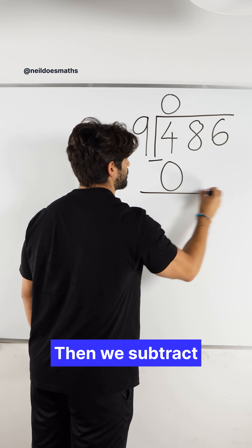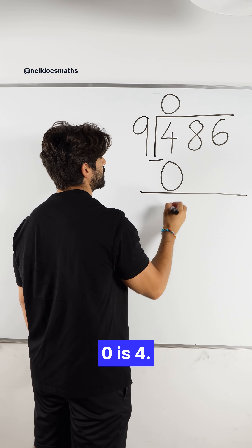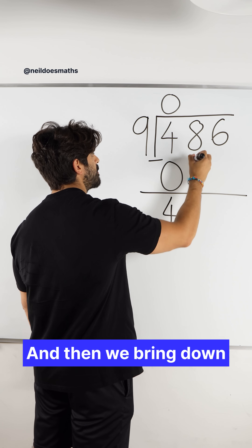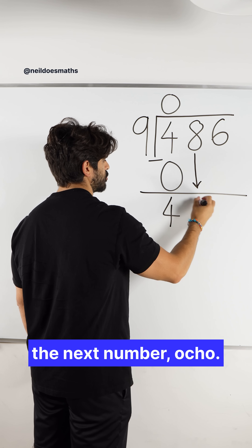Zero times nine is zero. Then we subtract. Four take away zero is four. And then we bring down the next number, ocho.